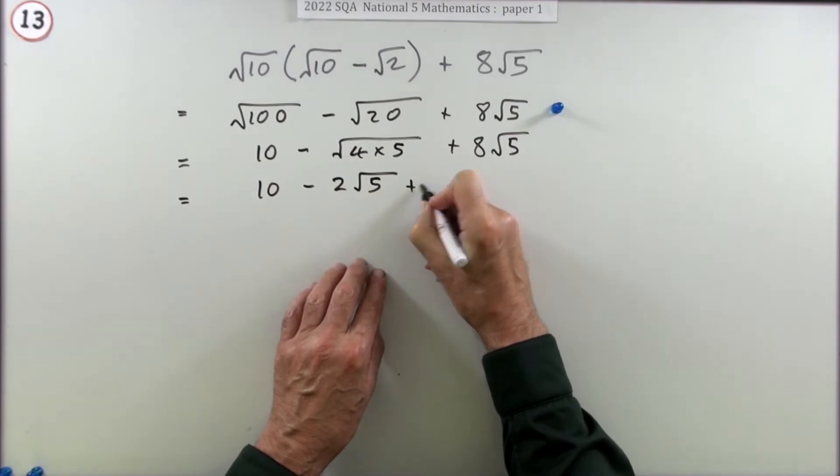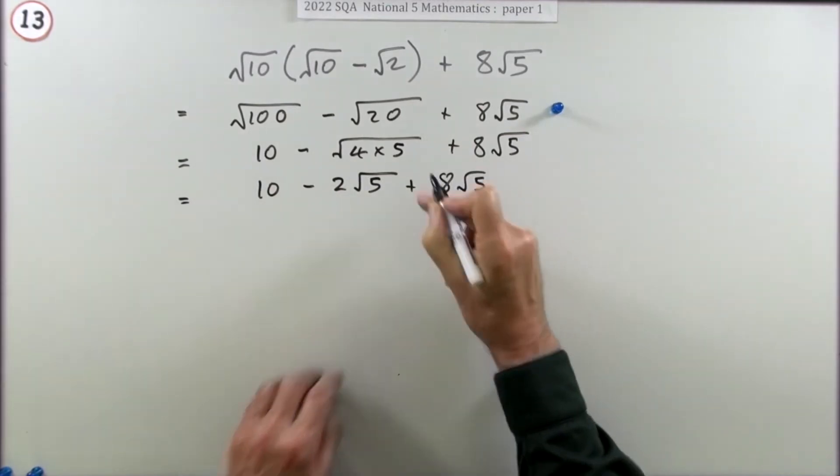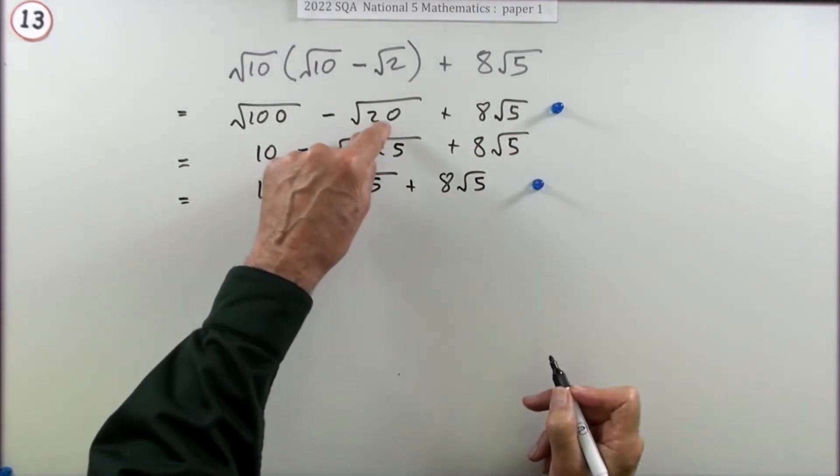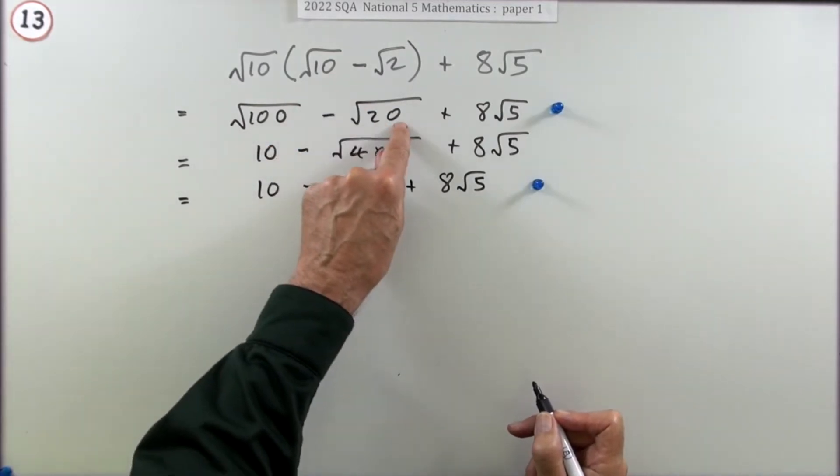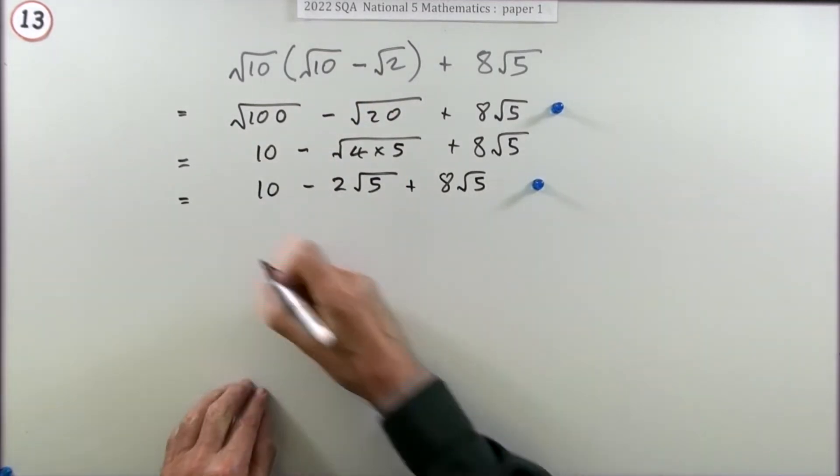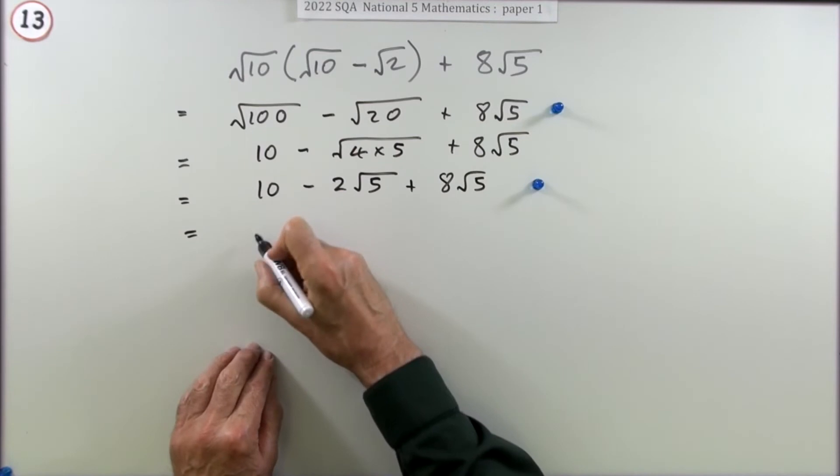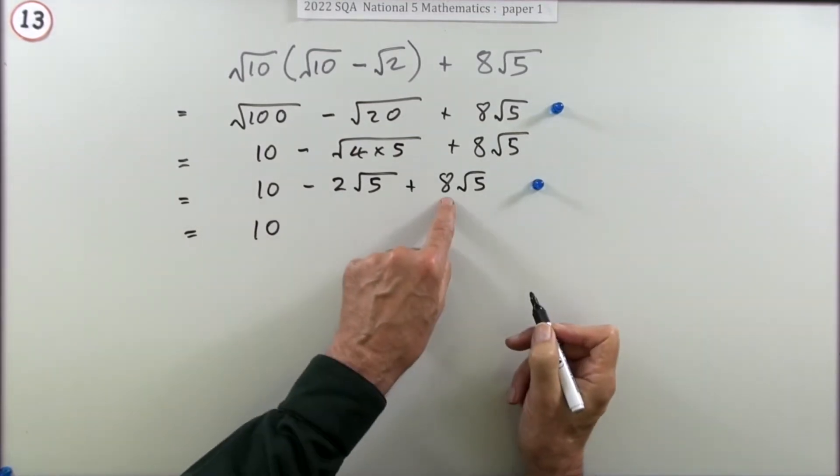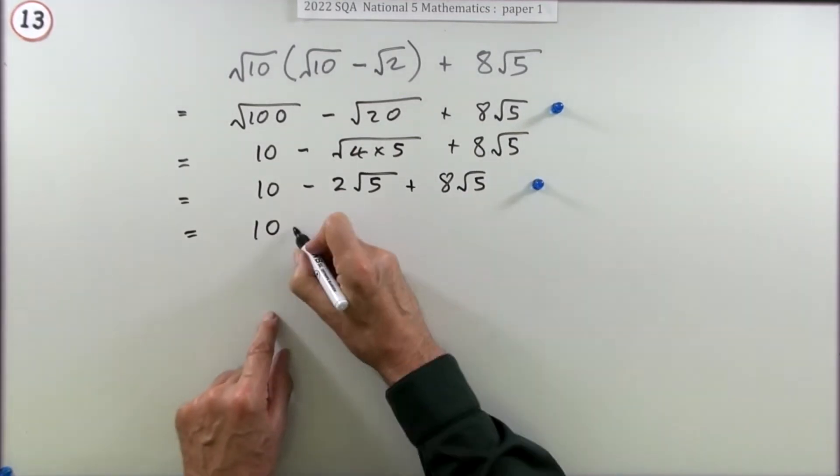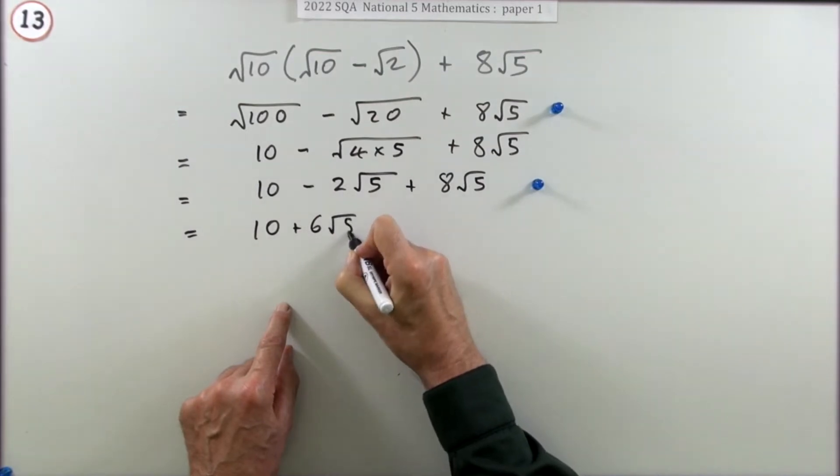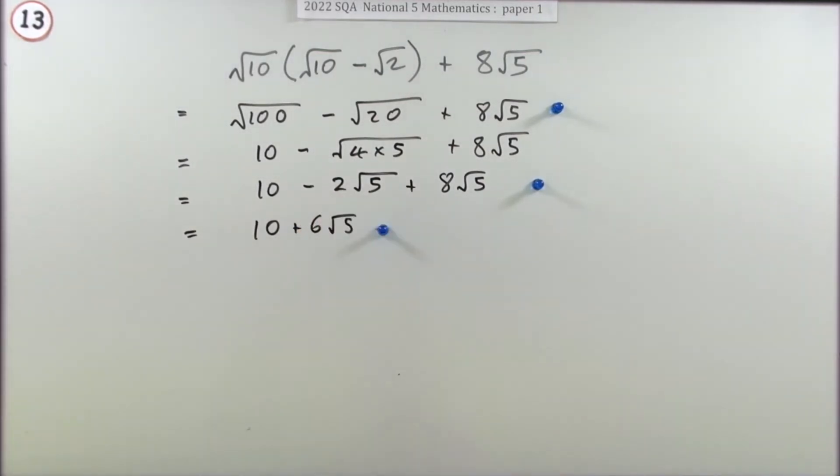That gets you a mark for simplifying that third, for getting root 20 to be 2 root 5. Now you just add it all up. Well 10 that's on its own, 8 of them take away 2 of them means you've got 6 of them. 10 plus 6 root 5 for the final answer.